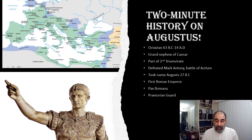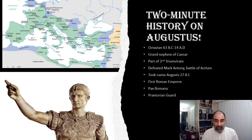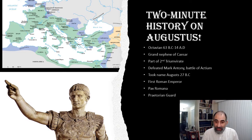What ends up happening is that through the Second Triumvirate, we get another civil war between Octavian and Mark Antony. This ends up becoming part of a big battle known as the Battle of Actium, where Octavian is victorious. This is also where you get Mark Antony and Cleopatra committing suicide.